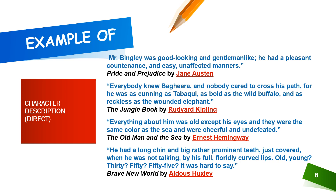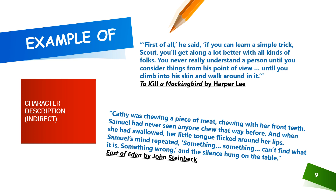Now some examples of indirect description. From To Kill a Mockingbird by Harper Lee: 'If you can learn a simple trick, Scout, you'll get along a lot better with all kinds of folks. You never really understand a person until you consider things from his point of view — until you climb into his skin and walk around in it.' It shows a pragmatic approach. From East of Eden by John Steinbeck: 'Kathy was chewing a piece of meat, chewing with her front teeth. Samuel had never seen anyone chew that way before, and when she had swallowed, her little tongue clicked around her lips. Samuel's mind repeated: something wrong... and the silence hung on the table.' There is suspense, doubt, and something peculiar going on.